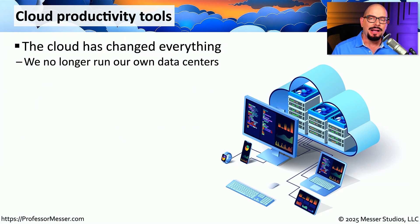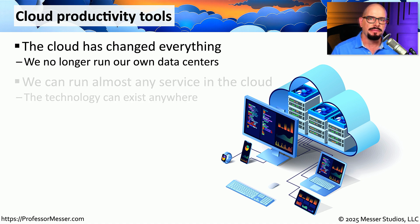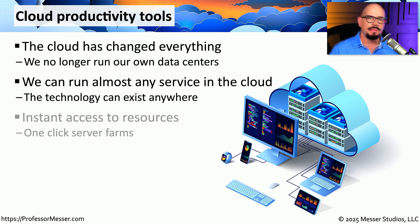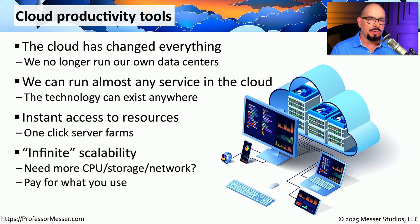It's undeniable that the cloud has changed how organizations interact with information in their data center. Many organizations no longer even have an on-premises data center, because we can run practically any technology in the cloud. All we need is enough bandwidth and we're able to move that technology to any place in the world. This allows organizations to put all of their data in the cloud and access it from anywhere. If you need additional storage space, additional CPU processing, or more network access, you can simply add that to your existing cloud infrastructure.